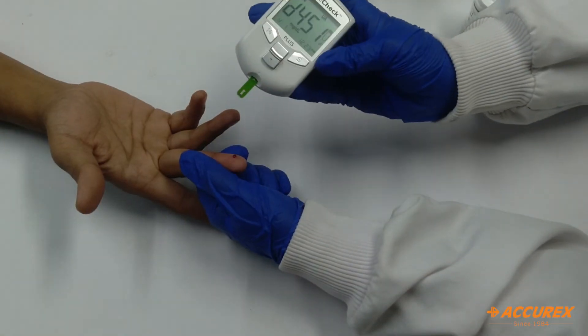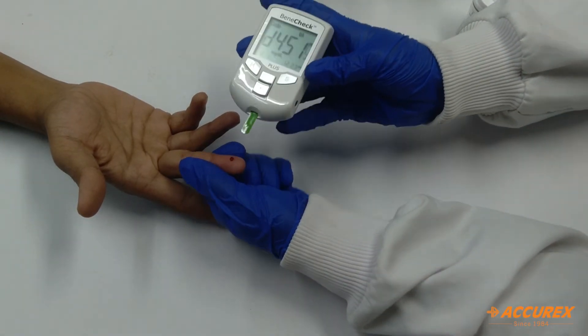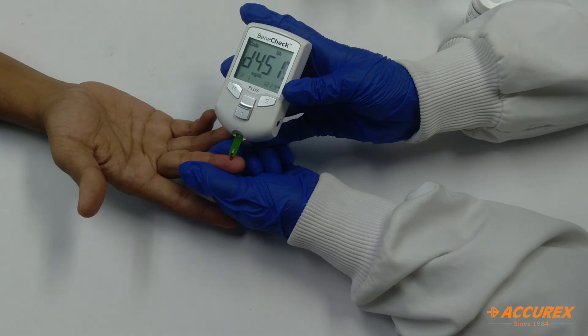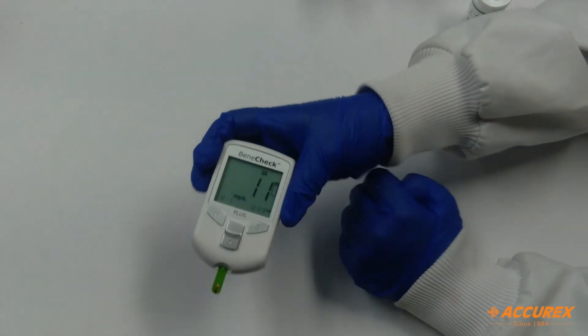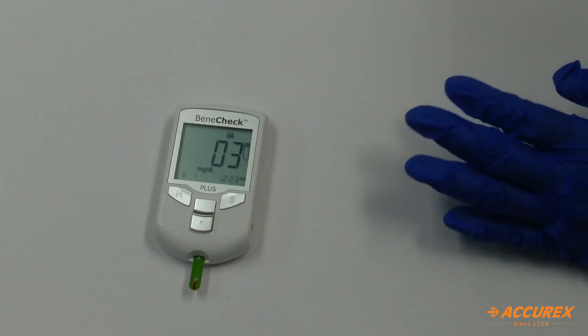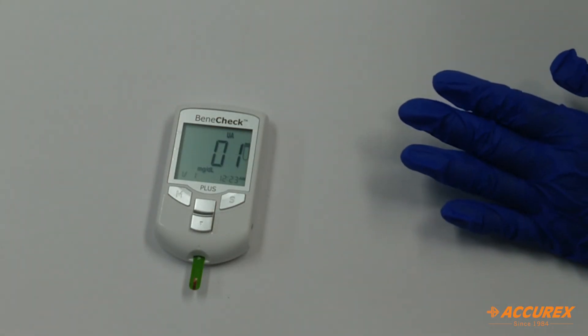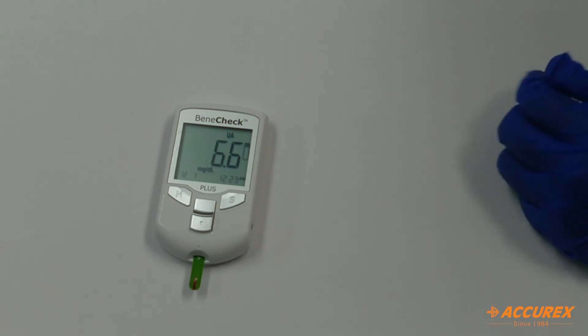We have inserted the strip in the meter. We will just place the strip on the blood and it will take 15 seconds of time to tell the result. After 15 seconds we will get the result for the uric acid level which is 6.6.